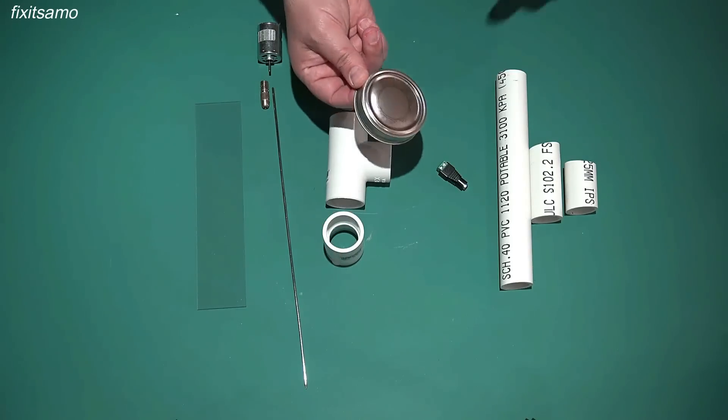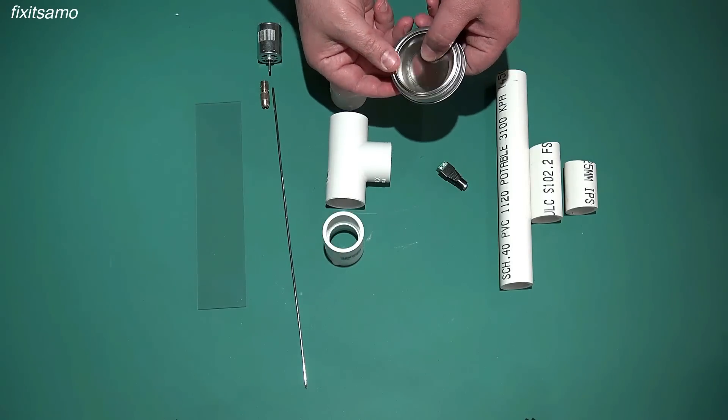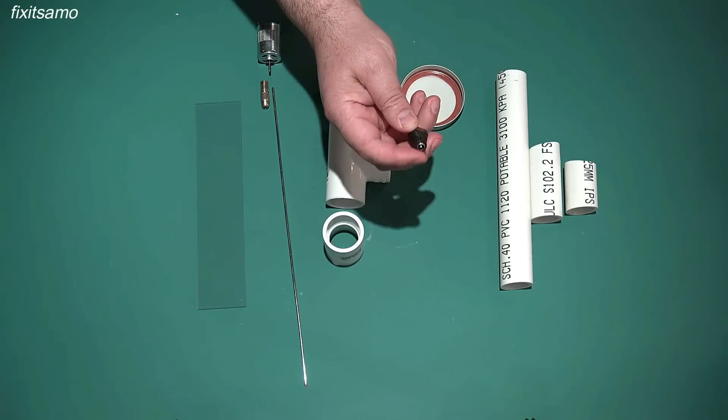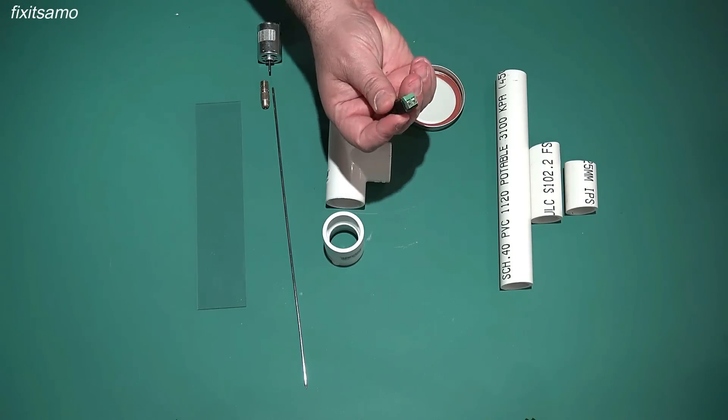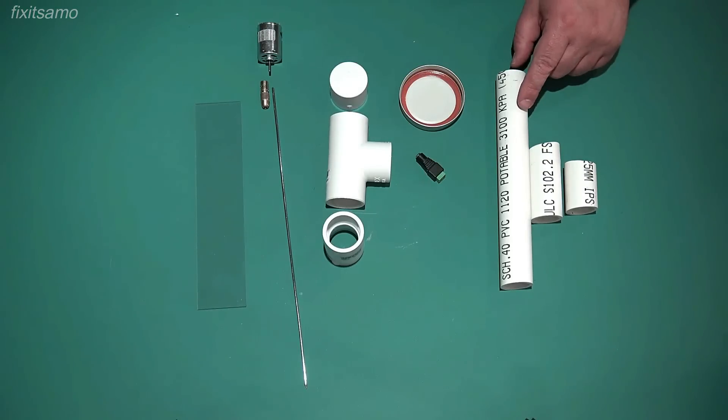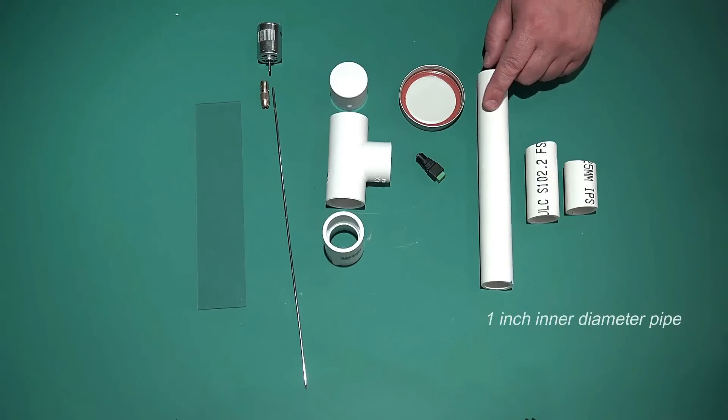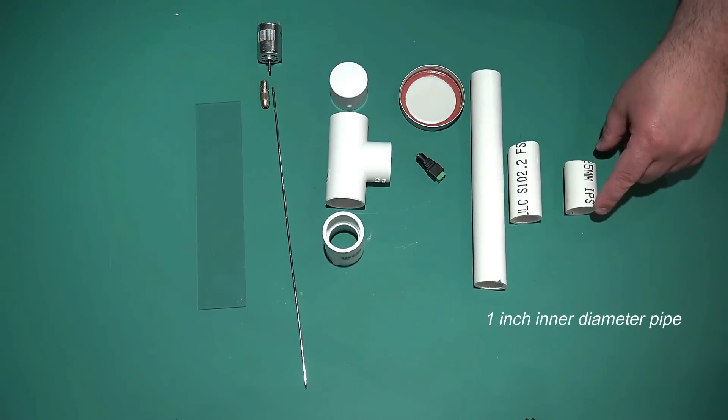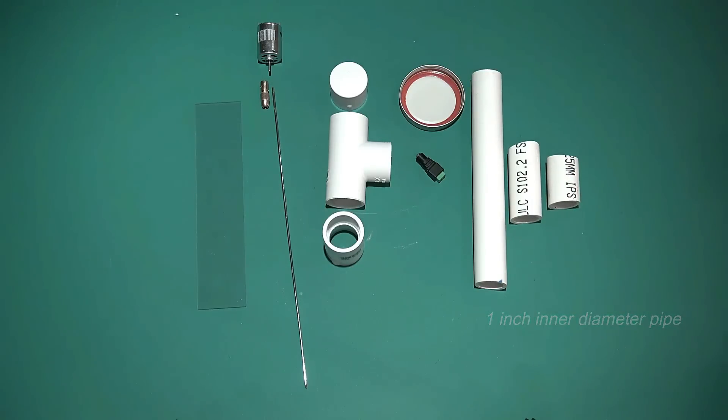For the impeller, I'm going to be using a mason jar lid like this and we're also going to need one female connection for the motor. And at the end, we need a 9 inch PVC pipe, 3 inch and 2 inch PVC pipe.